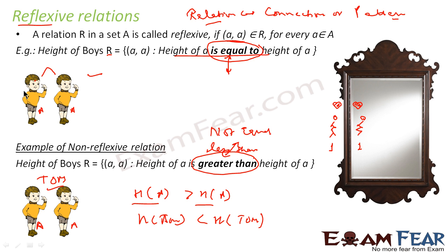Similarly, 'cost of pen A is equal to cost of pen A' is reflexive. But 'cost of pen A is greater than cost of pen A' is not reflexive and not possible, because it is the same pen.